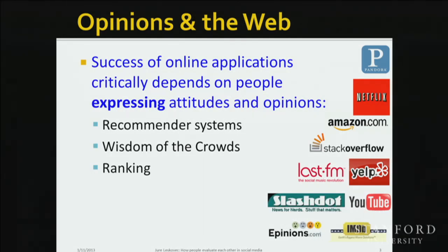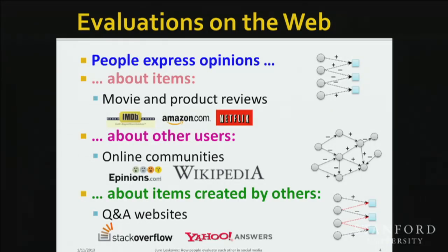All these sites are basically providing value to their community by studying or extracting opinions from other members, analyzing that, building a recommender system, and then using that to recommend music, restaurants, products, interesting questions — things like that. That is really how central evaluations are to the web today. If you think about evaluations on the web, there are various different things that humans evaluate, and the most common is having a set of humans evaluating a set of products.